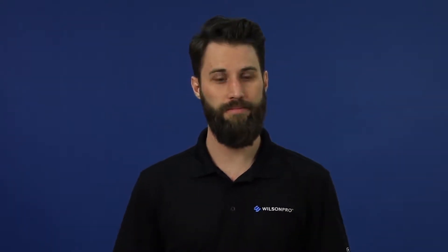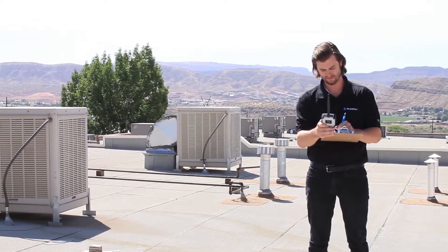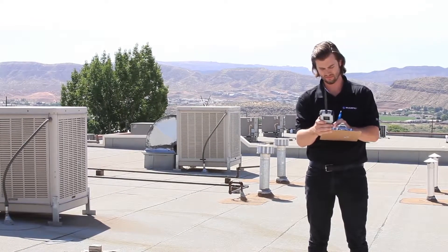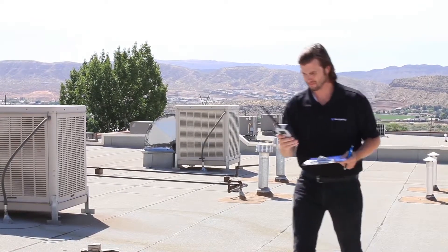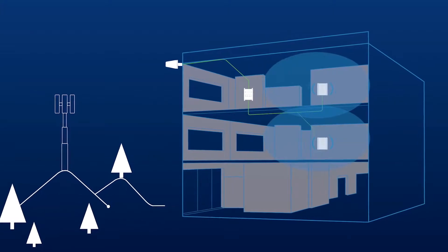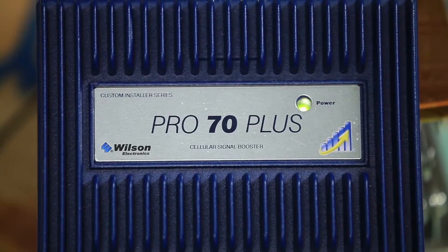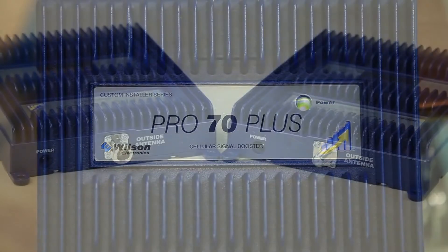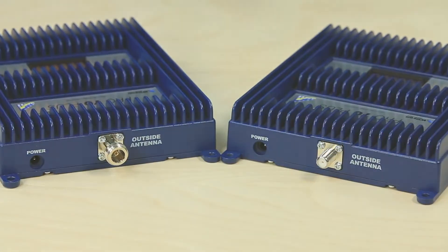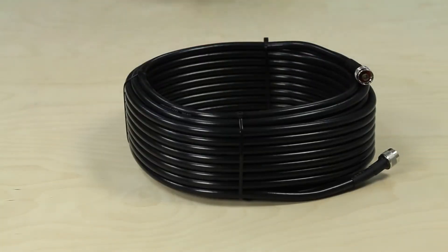It all starts with outside signal. Knowing the outside signal strength will help you determine a number of things, like: is there enough signal to use a signal amplifier system? How much coverage can be expected from each amplifier? How many inside antennas can the amplifier support? How many total amplifiers will be needed? And what can your max cable lengths be?